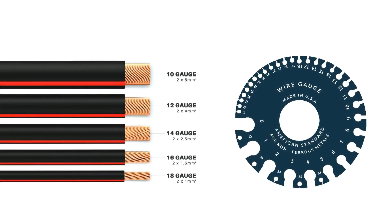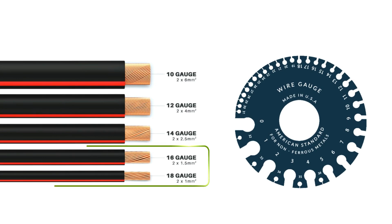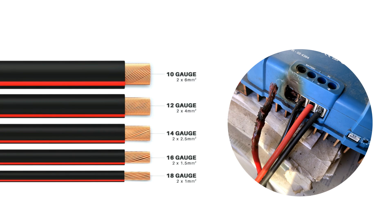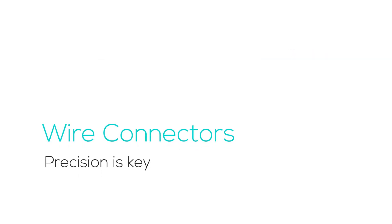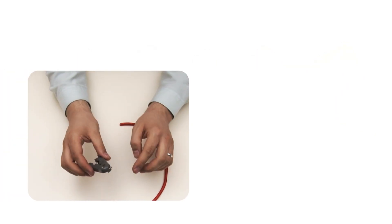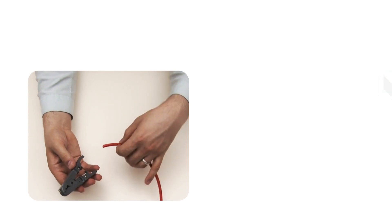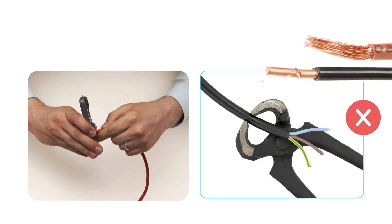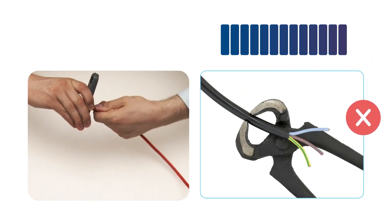Wire gauge — essentially how thick the wire is — and its length are both very important. A wire that's long and thin can resist the flow of electricity, and if this resistance gets too high, it not only causes more energy loss but can even lead to fires. Besides cables, elements like cable lugs and proper tools are needed. It's vital to strip insulation with precision, so specialized stripping tools are recommended. Always avoid using inappropriate tools, which can compromise connections and lead to overheating.